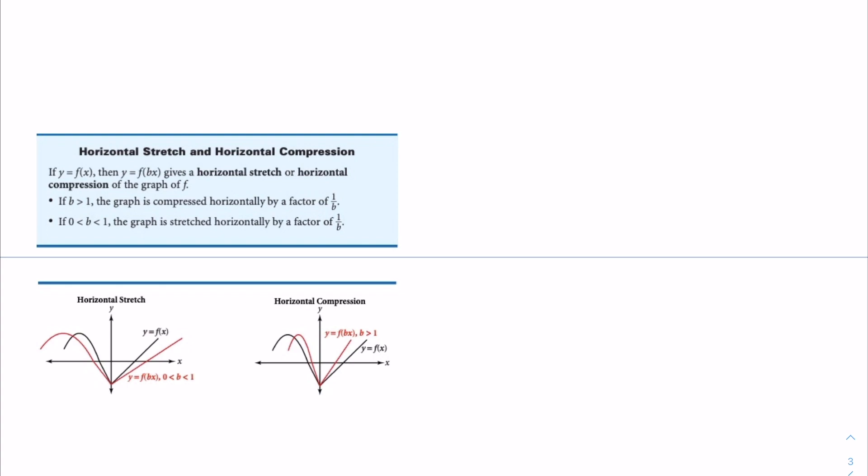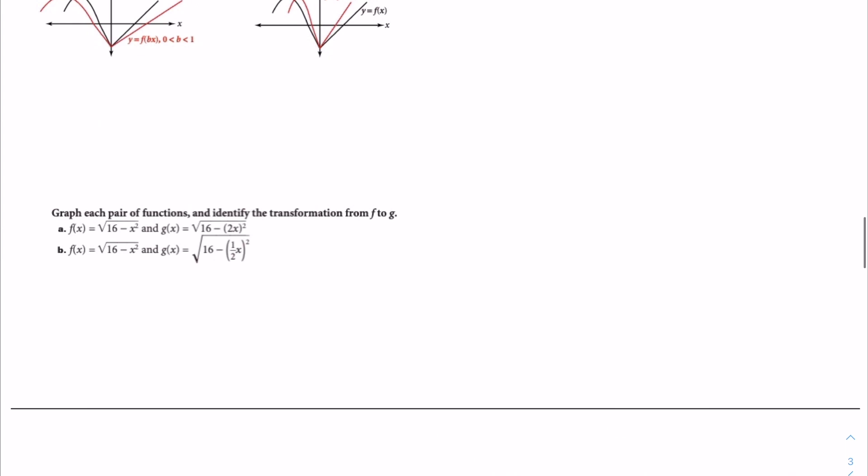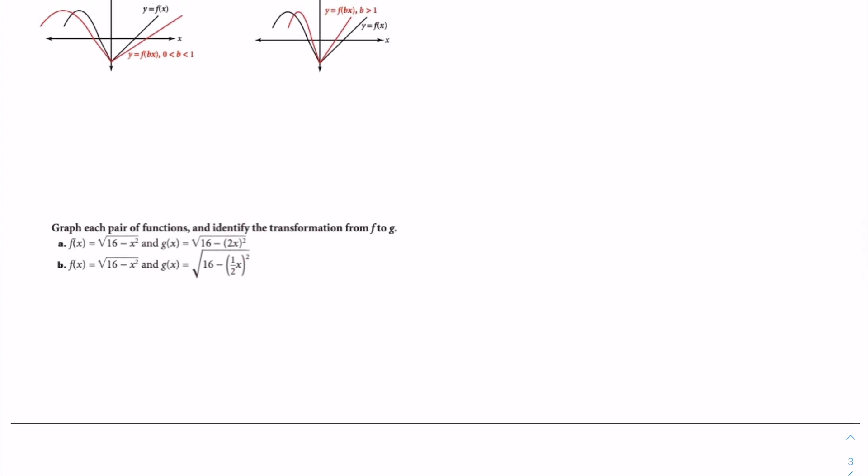On the graph, it shows that the horizontal stretch is stretching the graph to both sides of the coordinate plane, and for the horizontal compression you can see that it is squeezing the lines of the graph closer together. Graph each pair of functions and identify the transformation from f to g — do that on your calculator.